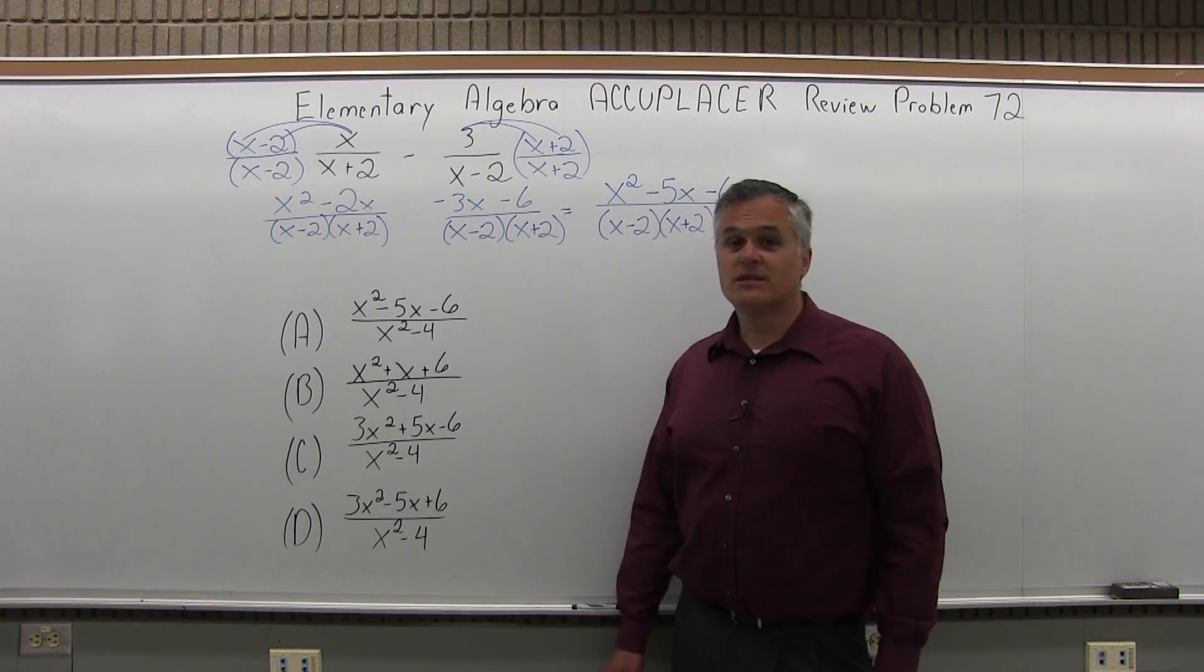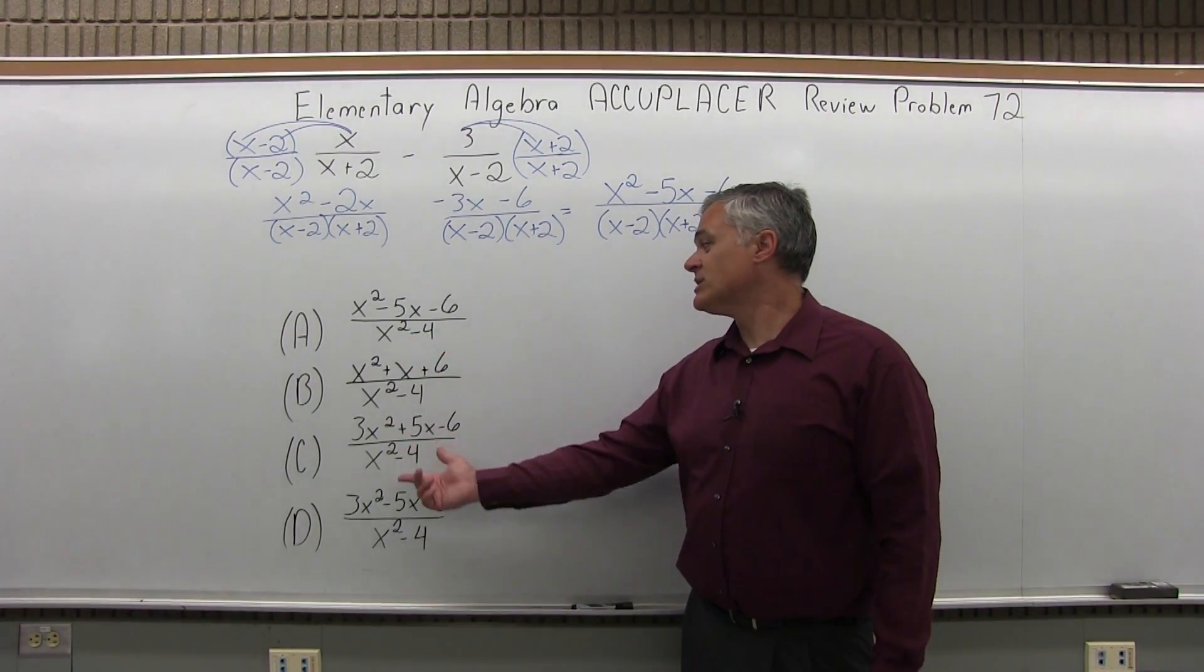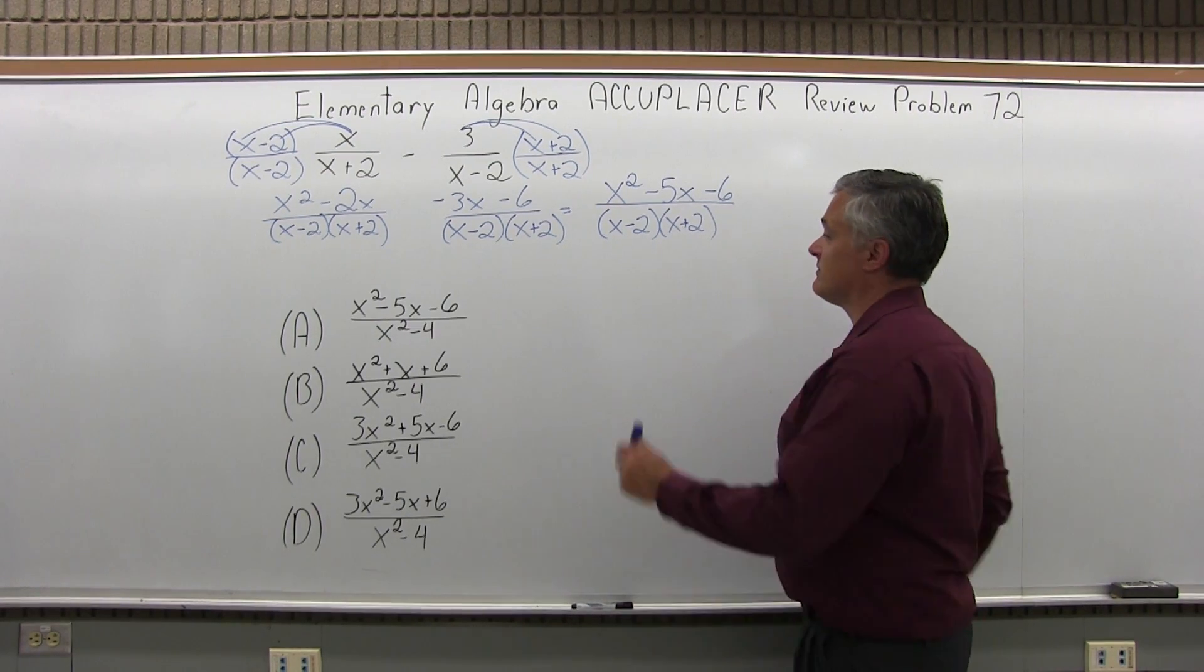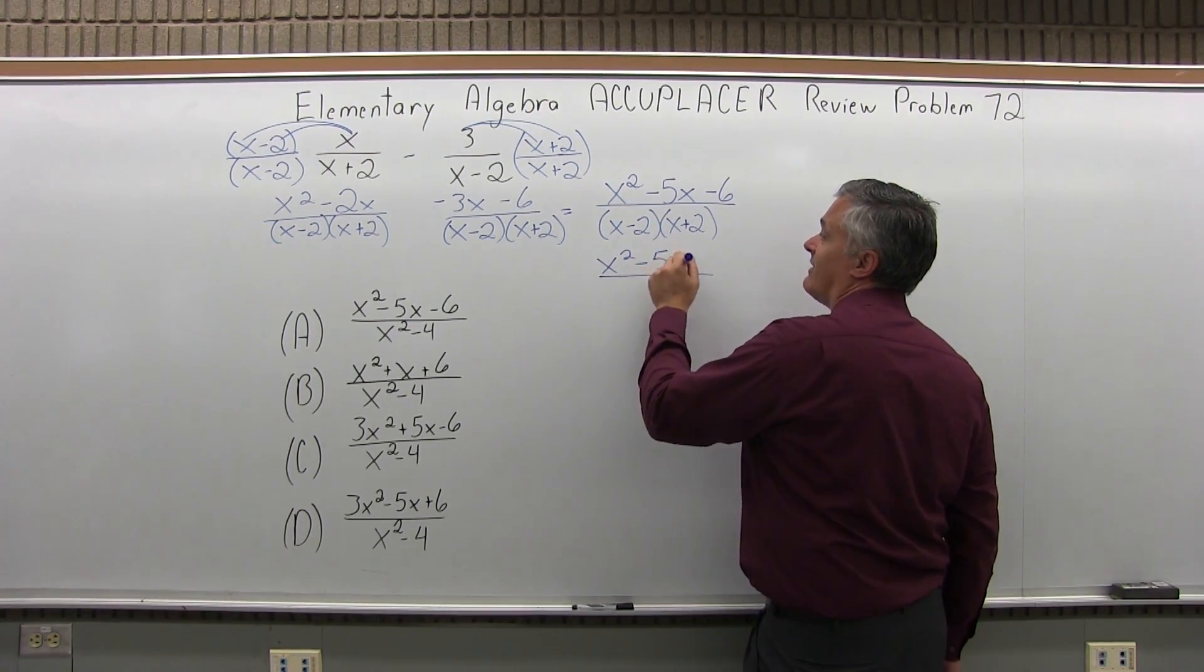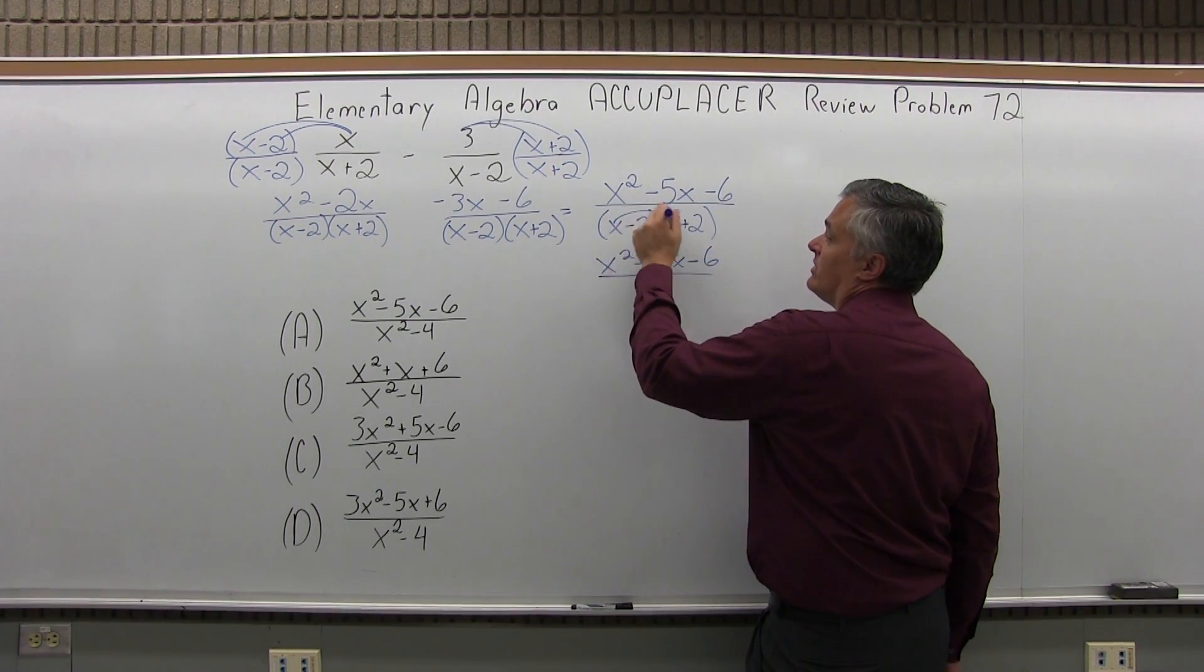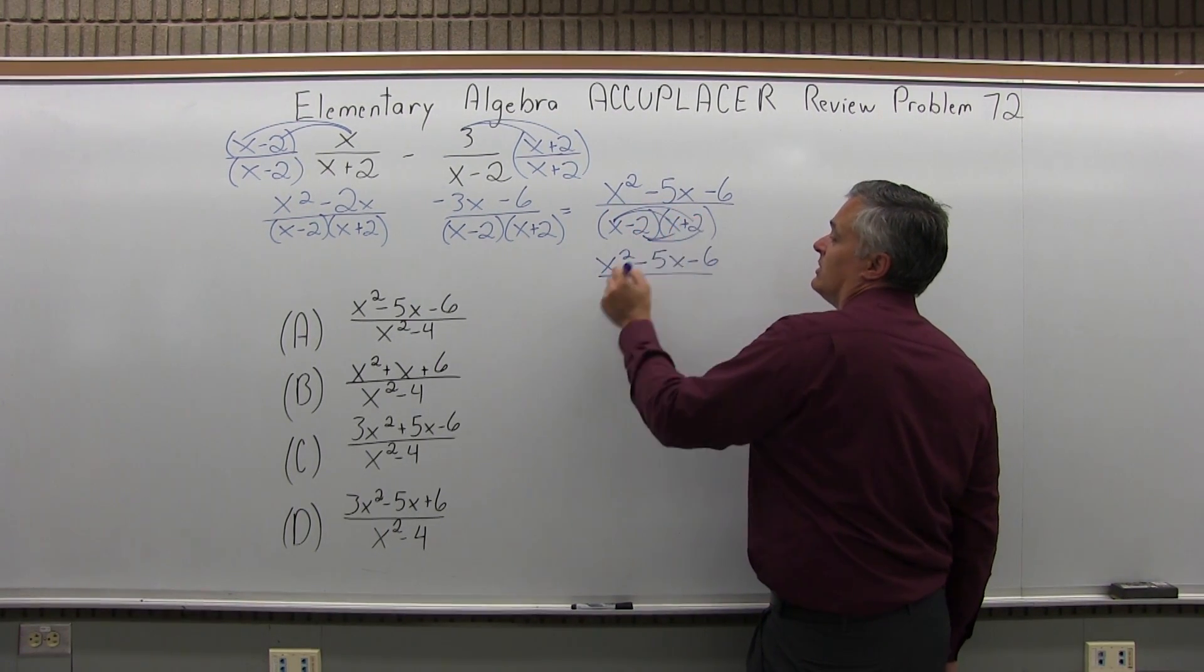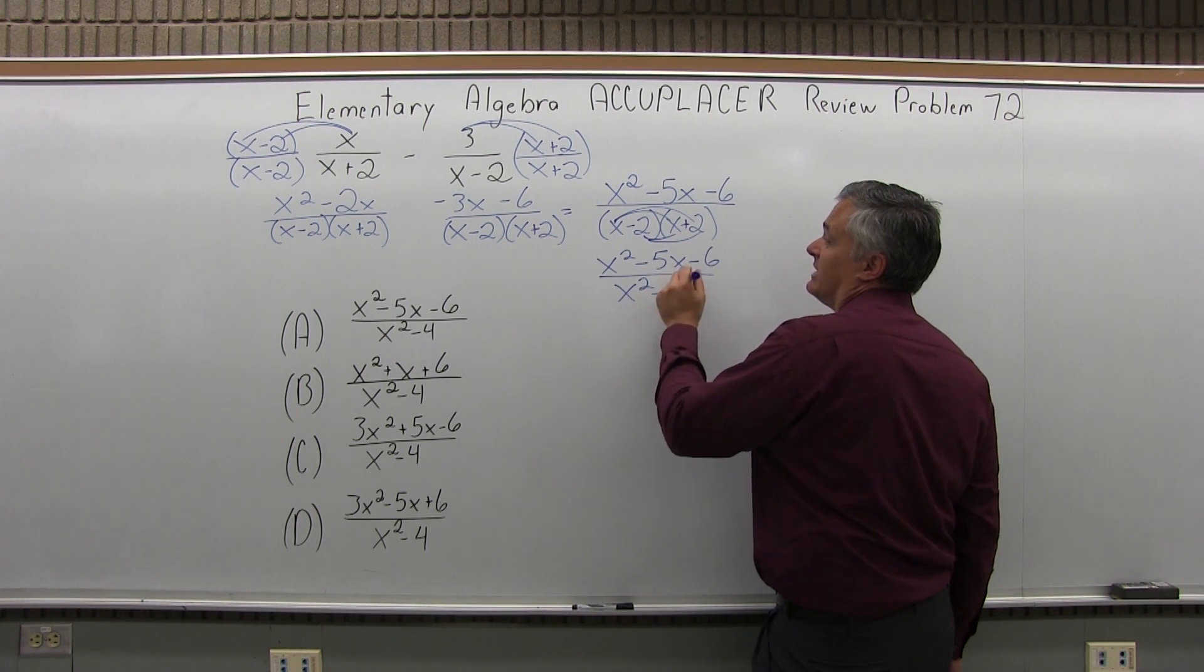So now as I look at my list of options, the denominator actually has been multiplied out. It's a difference of squares. So I can leave the top x squared minus 5x minus 6. And the bottom, if you do the difference of squares, you will get x squared minus 4.